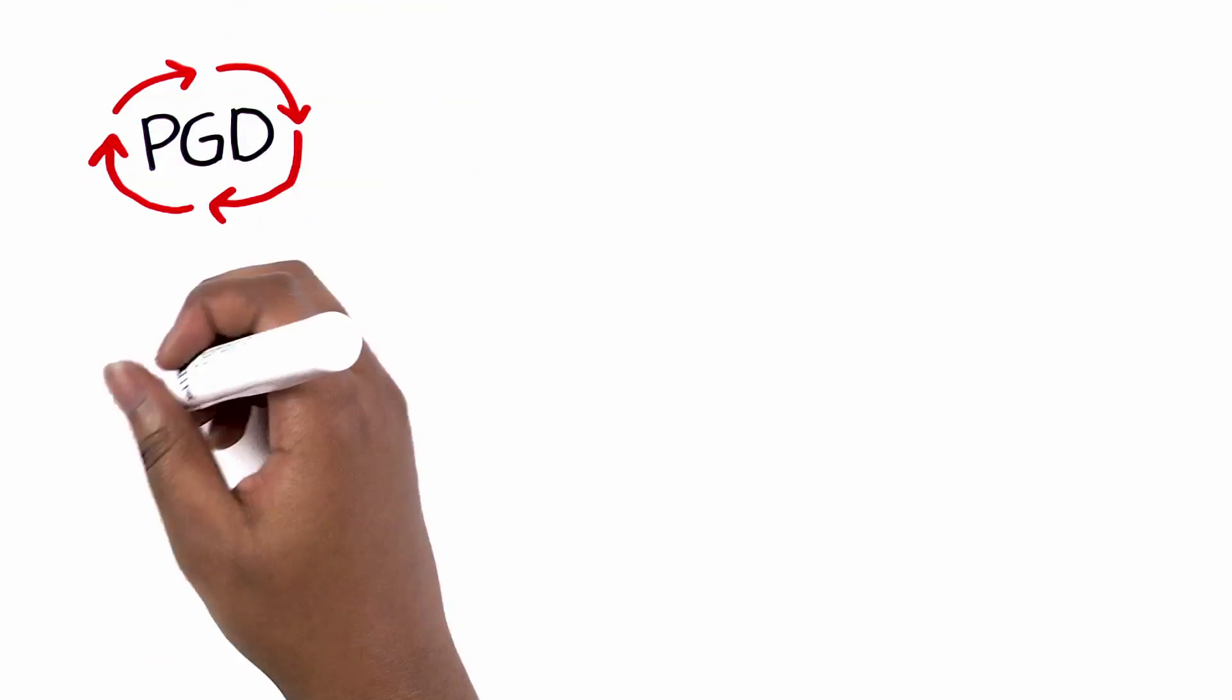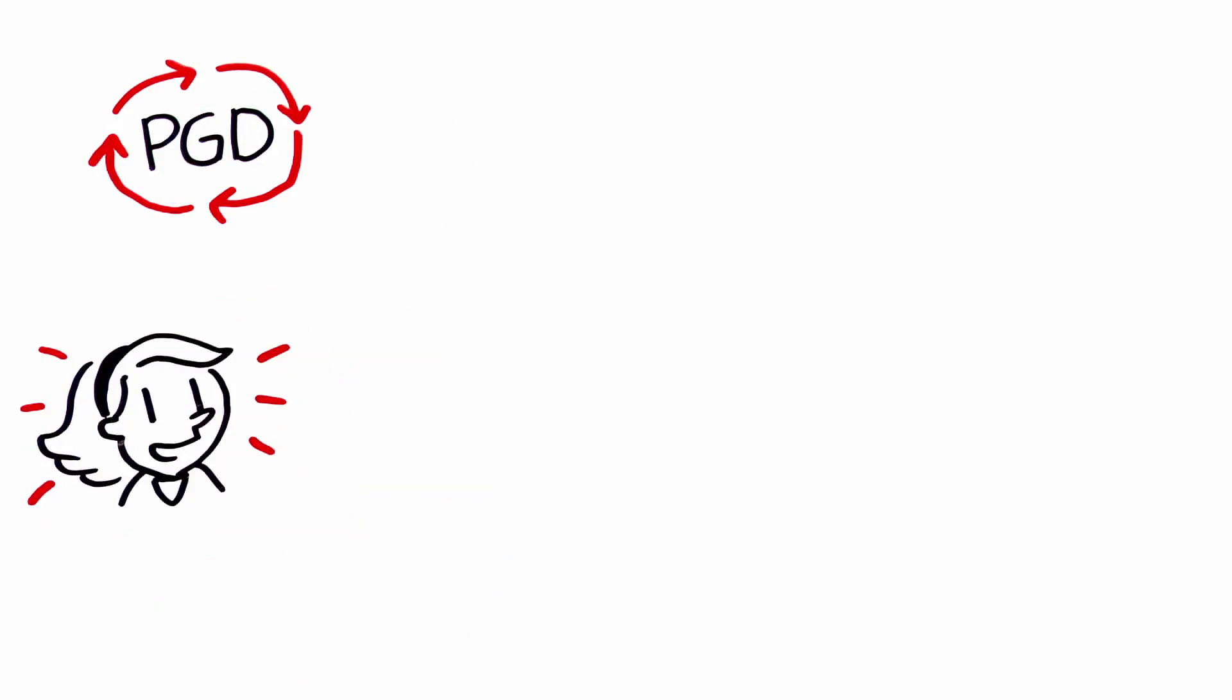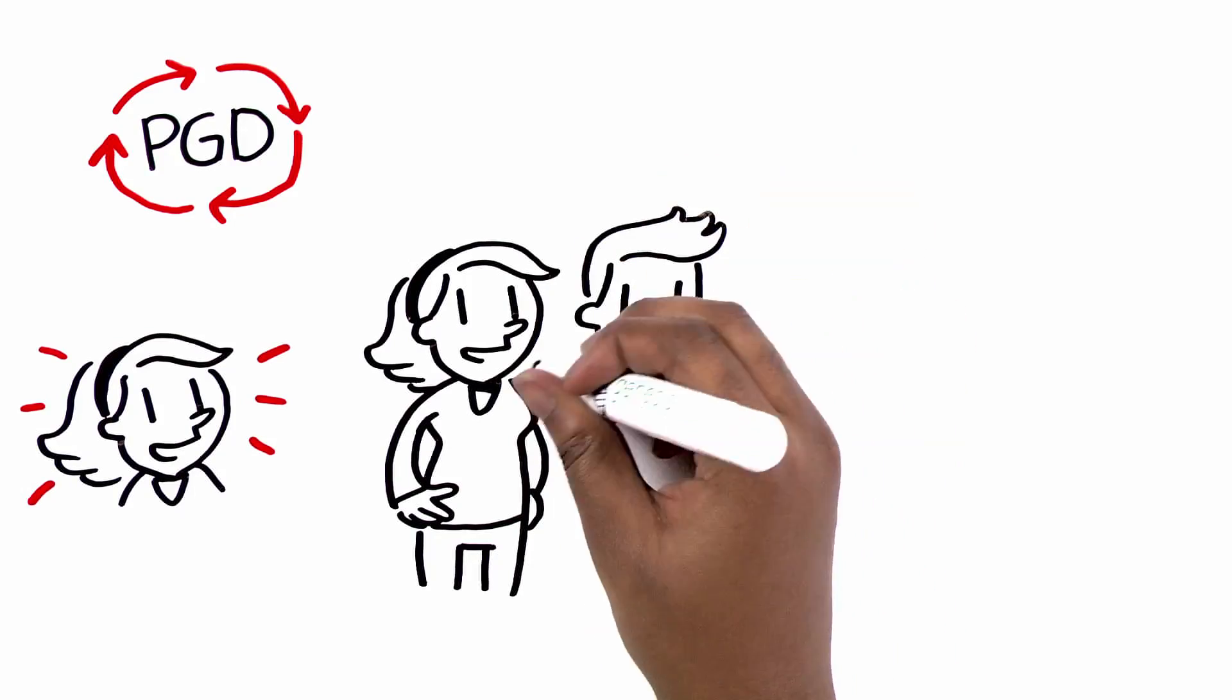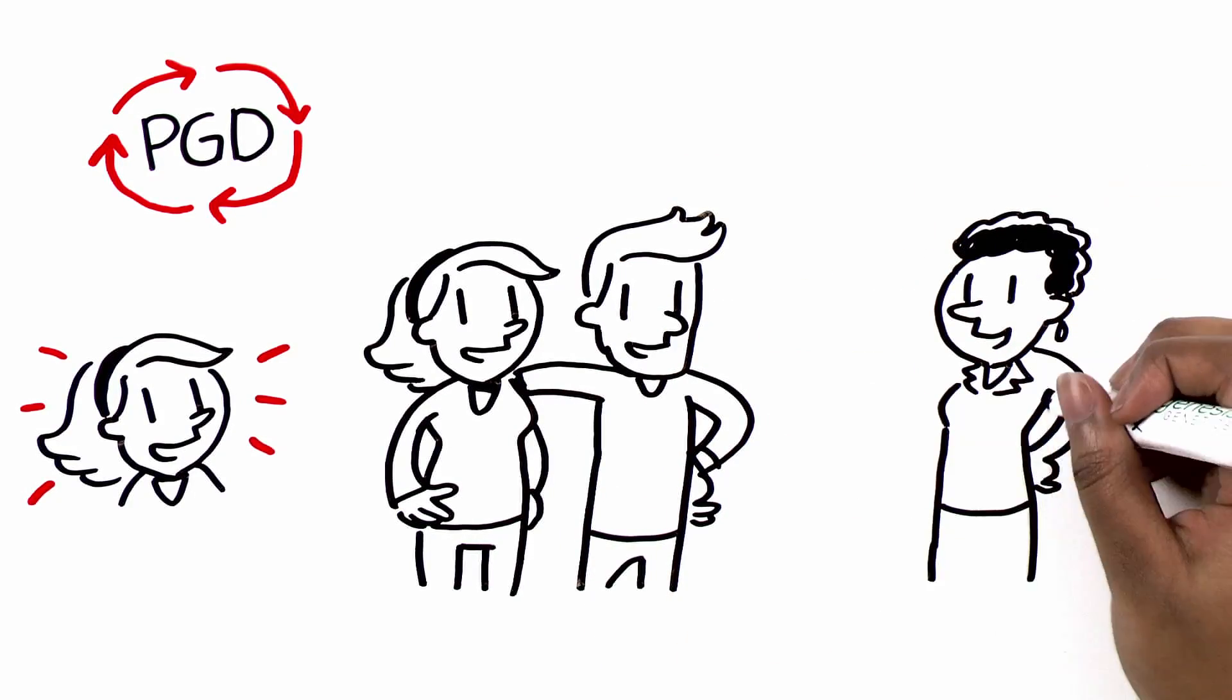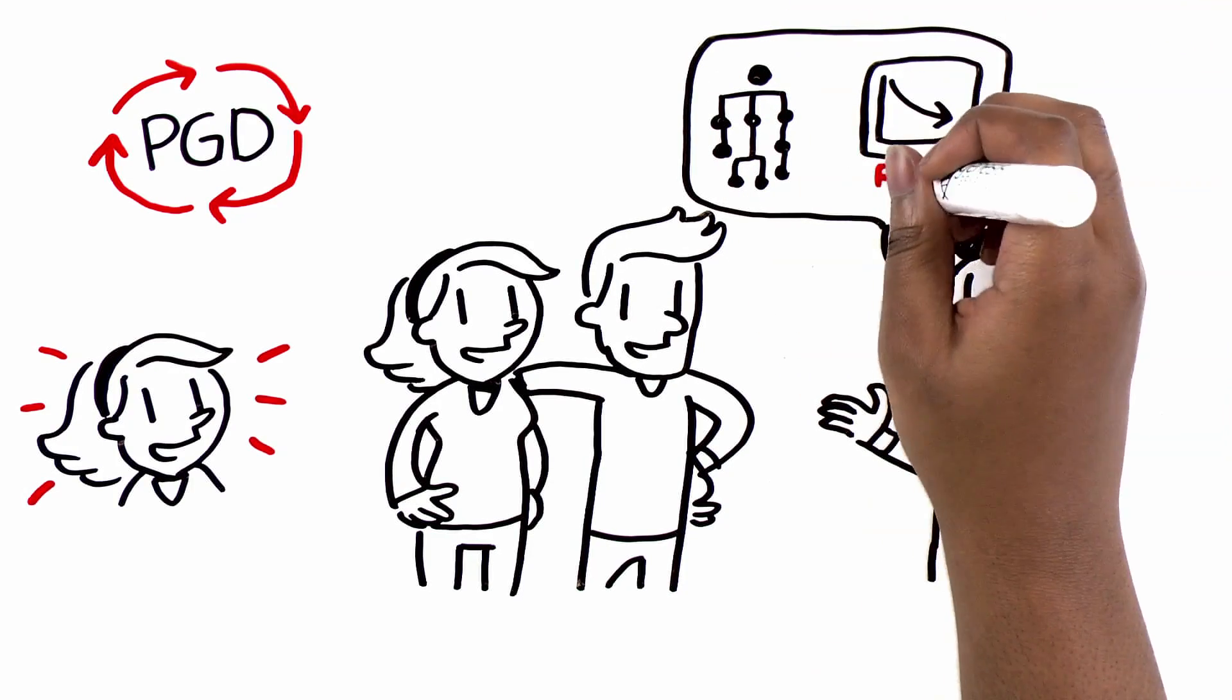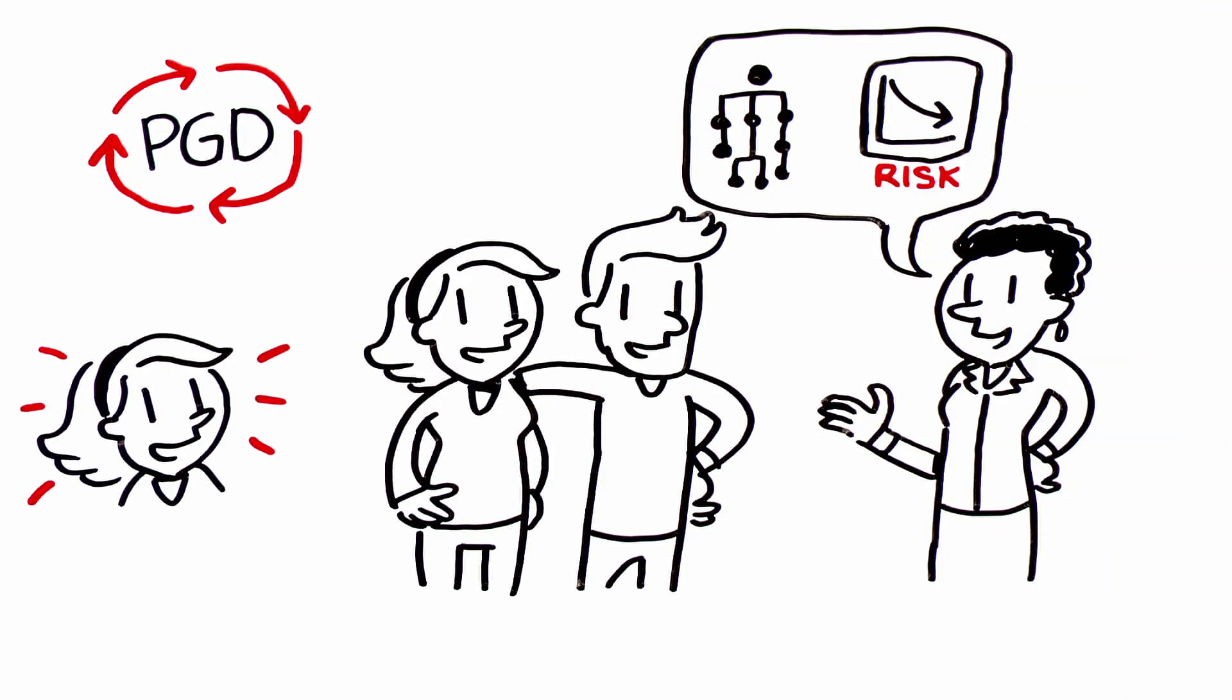PGD is a four-step process, and you'll stay involved through all of it. Once you decide to move forward with PGD, you'll speak with an expert genetic consultant at Genesis Genetics, who will talk you through your family history, risk level, and any other relevant issues.